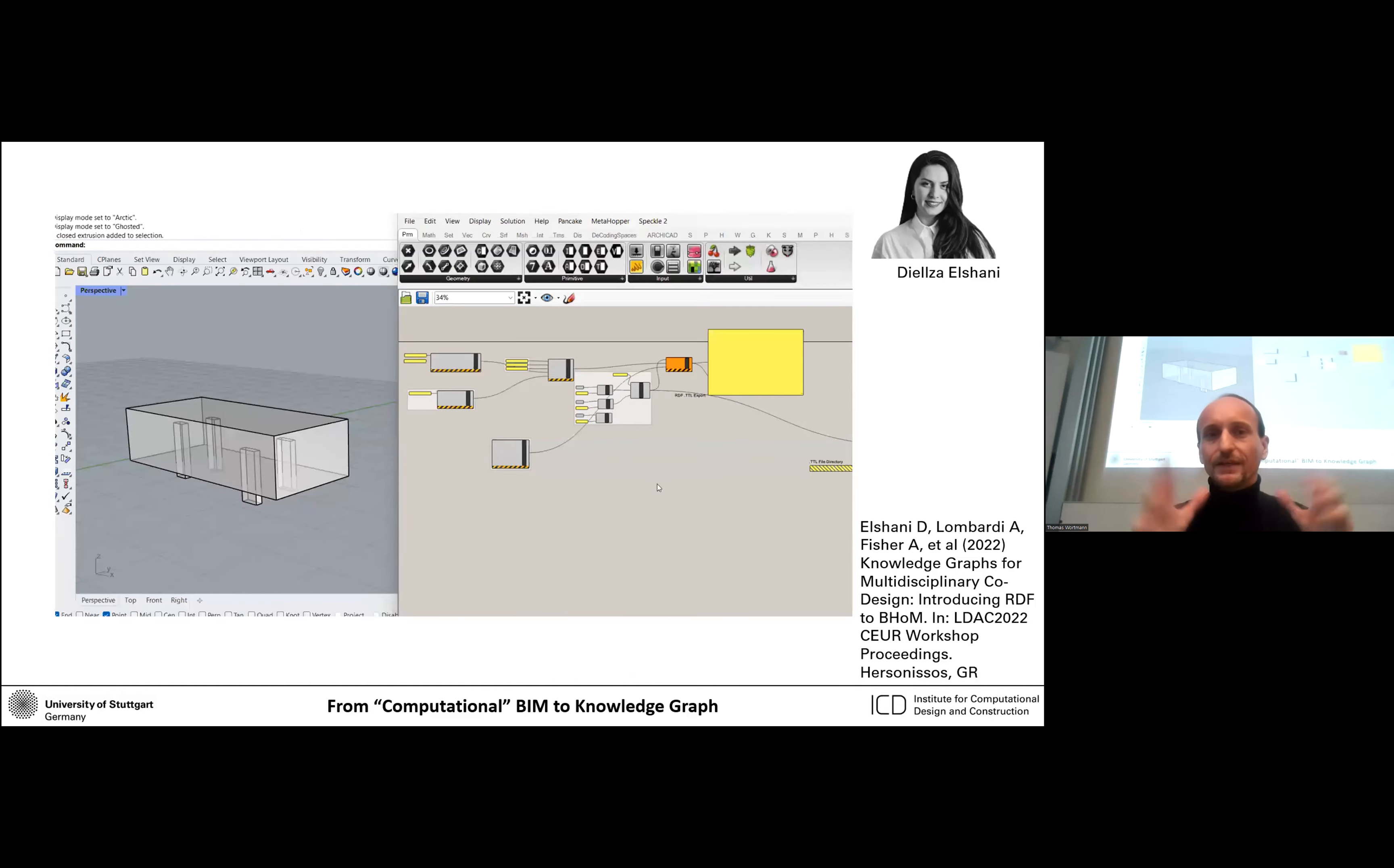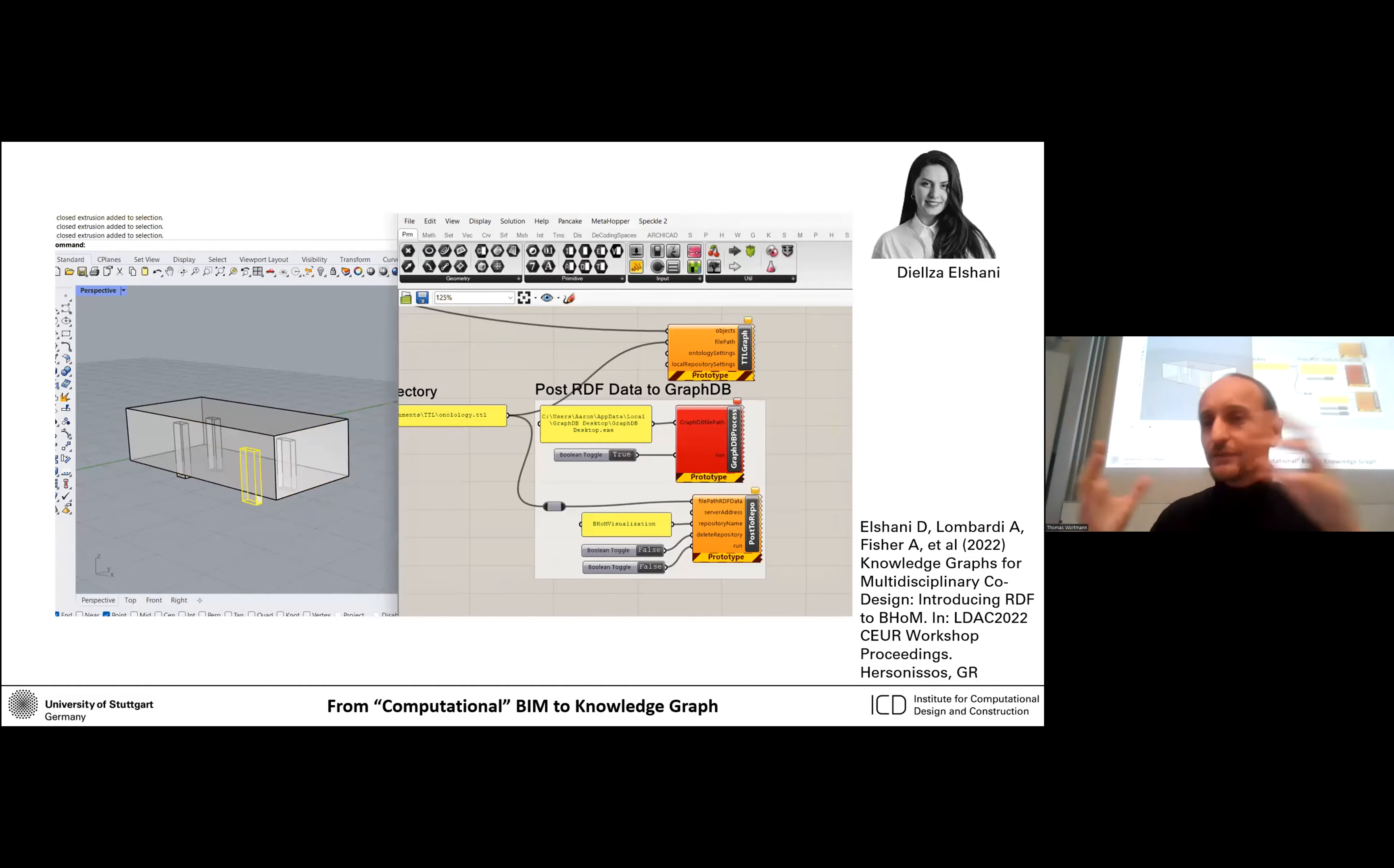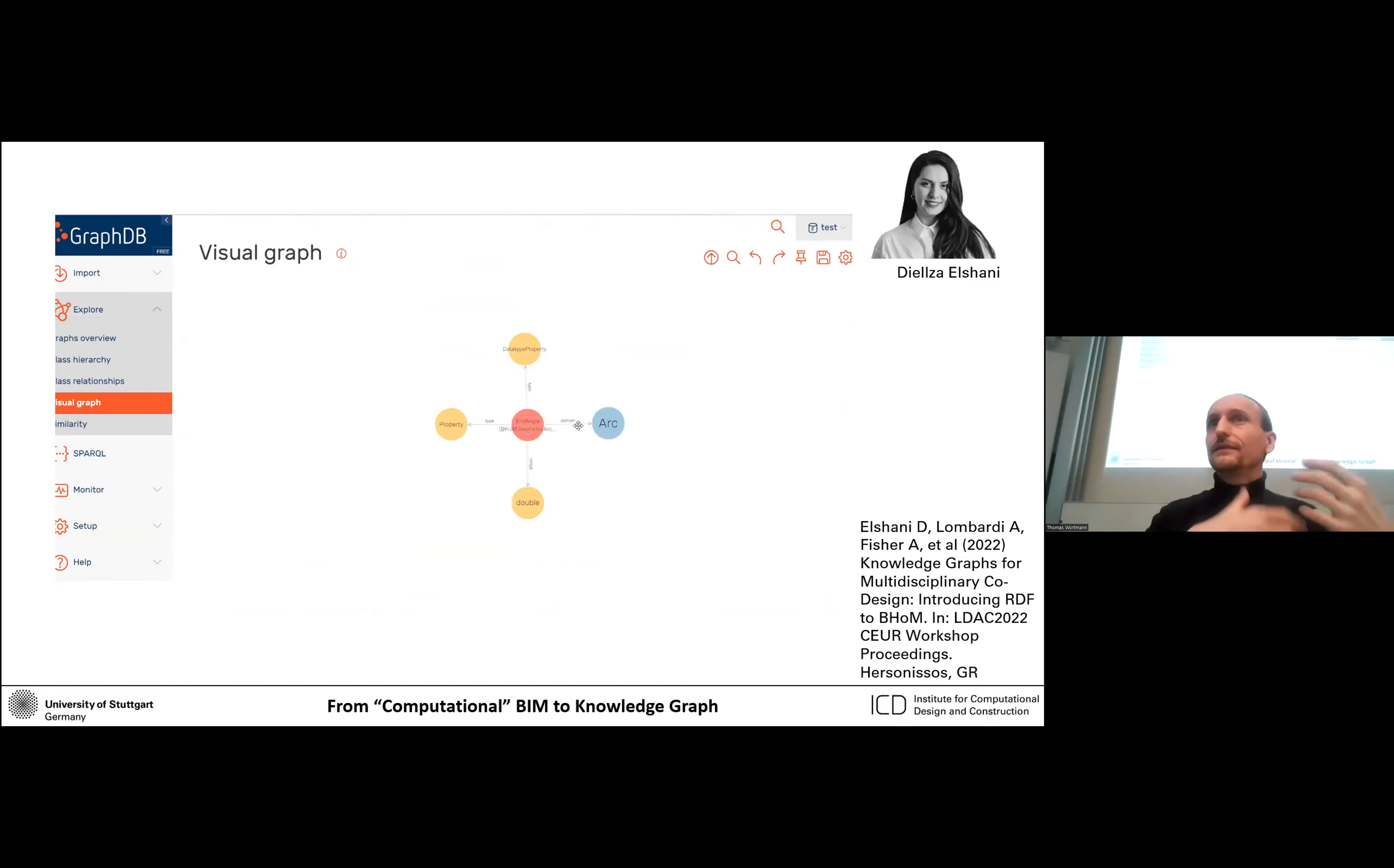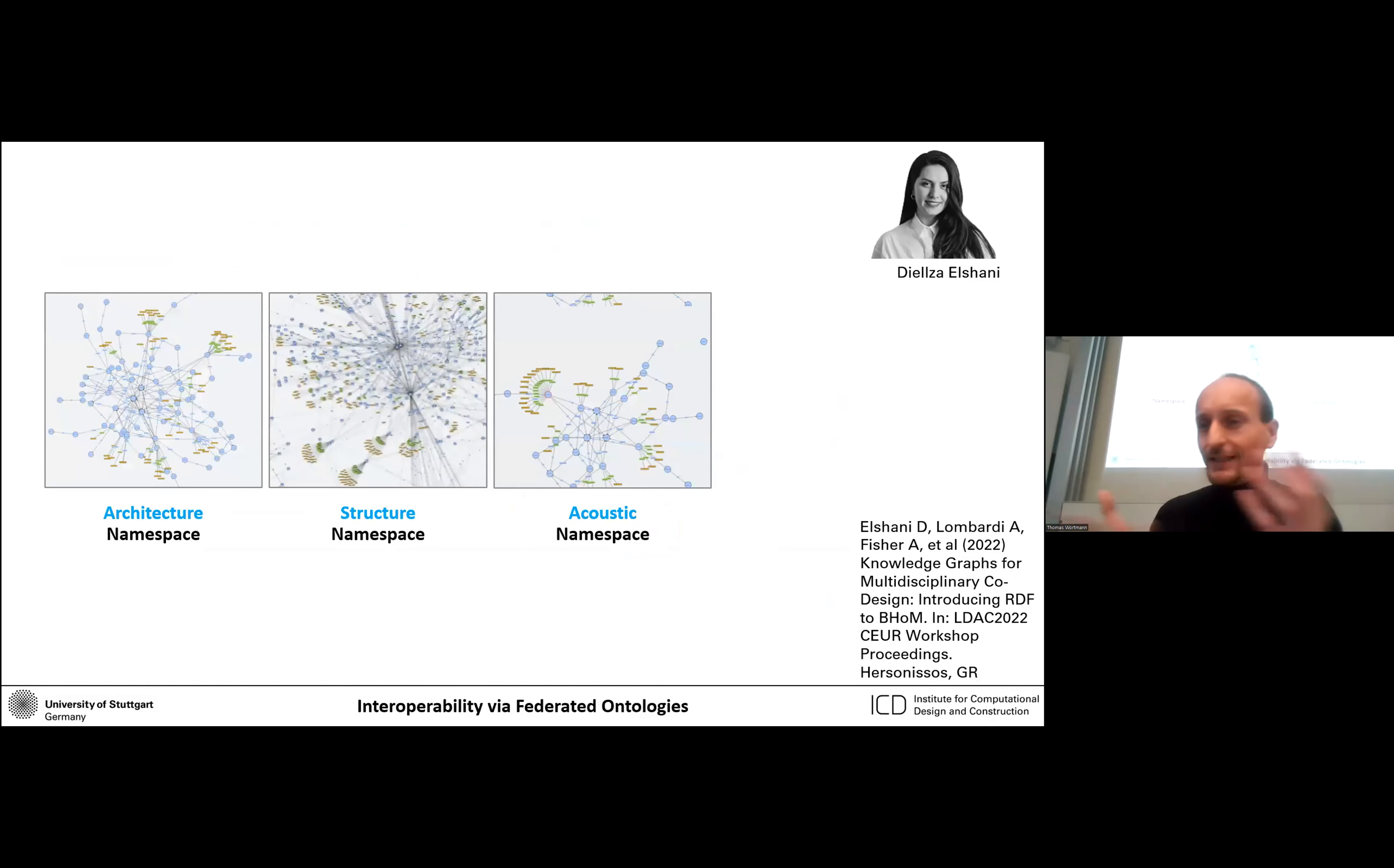RDF, which you might or might not know, resource description framework, that is like the language of the standard in which knowledge graphs are expressed. Basically, yeah, so there's this mapping process that we take. You could think this basically take the knowledge of the Buro Happold engineers that they have encoded in the BHoM data model and now map it into the knowledge graph. That's just the first step. The result of that then is now an application in Grasshopper where one can do BIM and sort of create models that have concepts like columns and walls and that have structural properties and features and so on. We can convert it into a graph, we can visualize it, and then we can do certain queries on the graph.